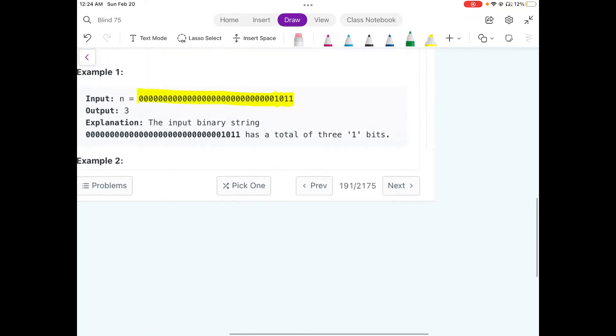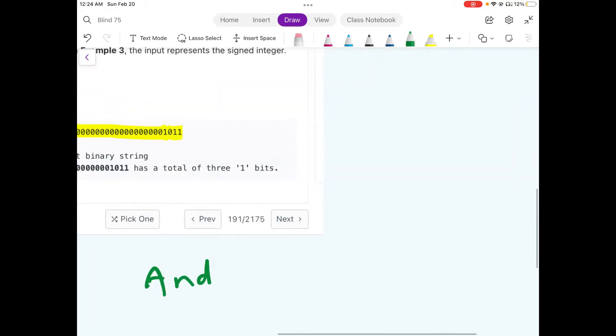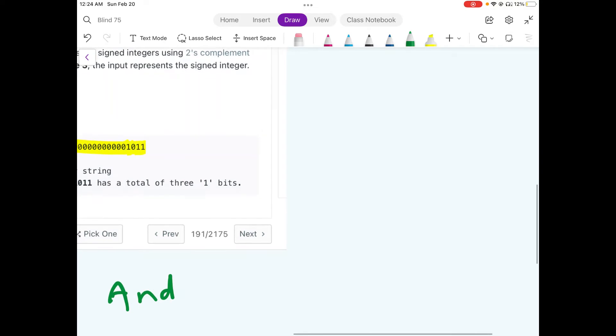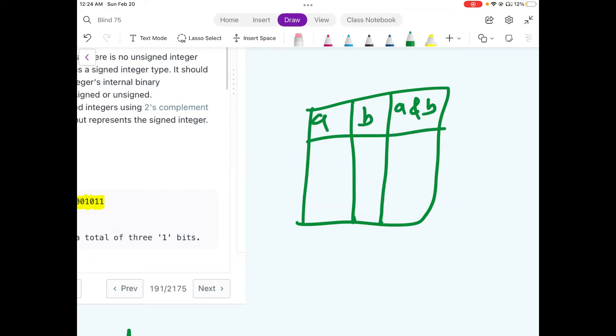So the first approach we are going to take is quite simple. And we are going to use a binary operator AND. Now let me show the table for AND binary operator for any given two values.